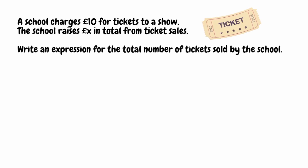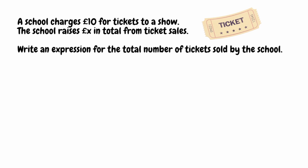For this question, a school charges £10 for tickets to a show. The school raises x pounds in total from ticket sales. We need to write an expression for the total number of tickets sold. If the school is charging £10 a ticket, the total is going to be a multiple of 10. So let's say they raised £400. If they're charging £10 a ticket and raised £400, we take the total of 400 and divide by the cost of each ticket, which is 10. So 400 divided by 10 gives us 40 tickets sold. That tells us the operation we need.